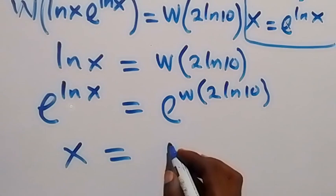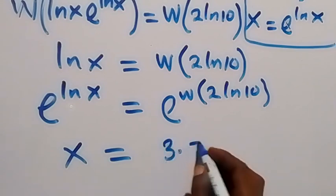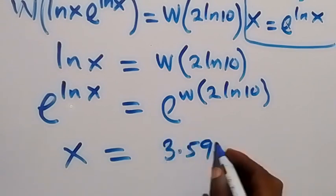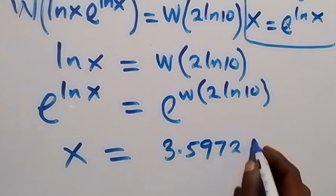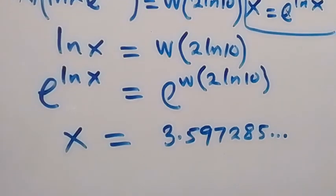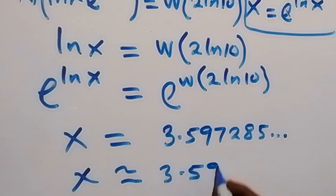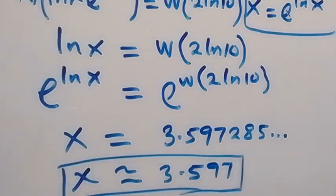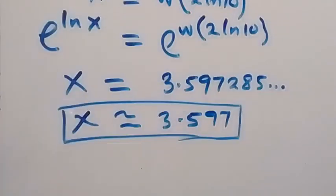Then this we reduce to x, which equals to... on this side, when we solve this, it gives us 3.597285 and so on, because it's an irrational number there. Then from here we can take it as approximately 3.597, and this we have the value of x from this problem.